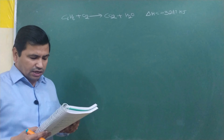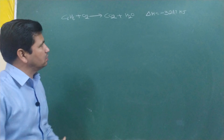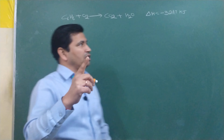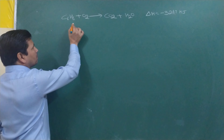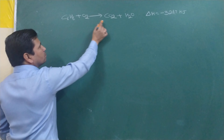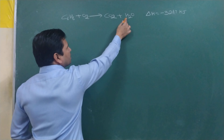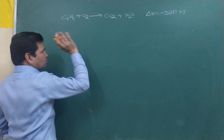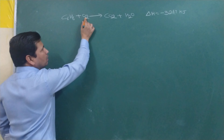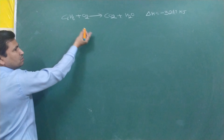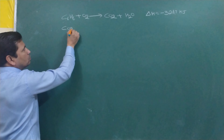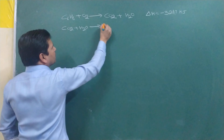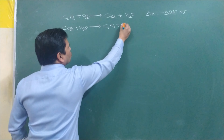To find enthalpy of formation of benzene, we think about how benzene is formed. If we reverse the combustion reaction — from CO₂ and H₂O back to C₆H₆ and O₂ — then the energy change also reverses. So for the reverse reaction, delta H becomes plus 3267 kJ.